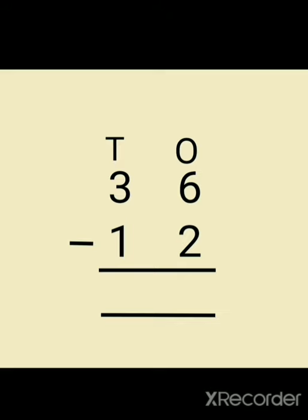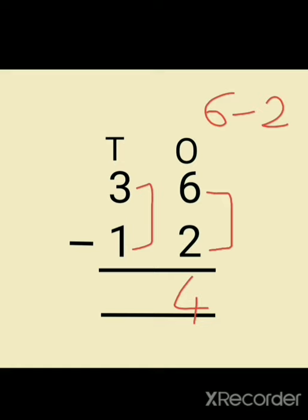We start any calculation from the right hand side. Starting from the right hand side we can see six and two. We will subtract six minus two, which will be equal to four. Next is three minus one, which will be equal to two. So the answer will be twenty four.